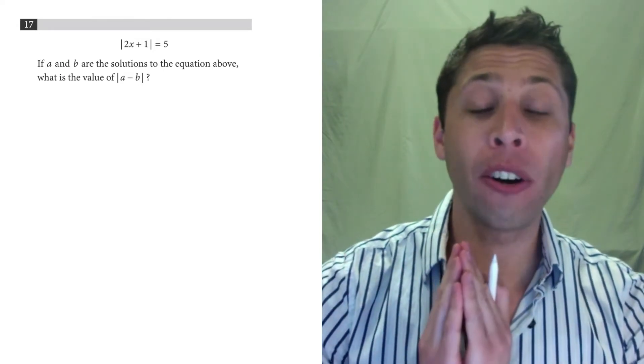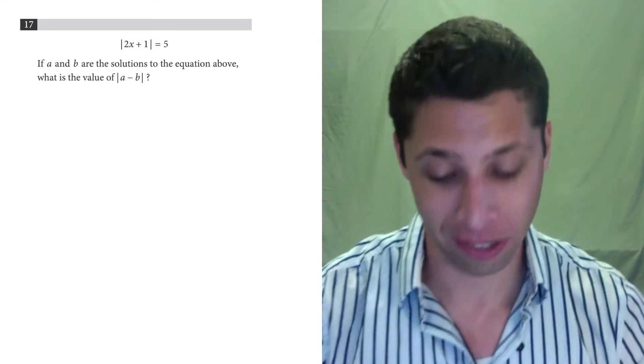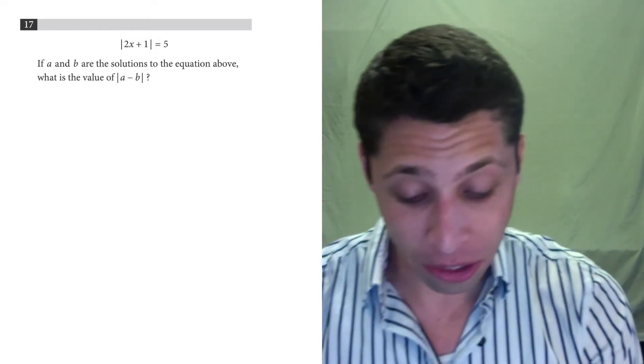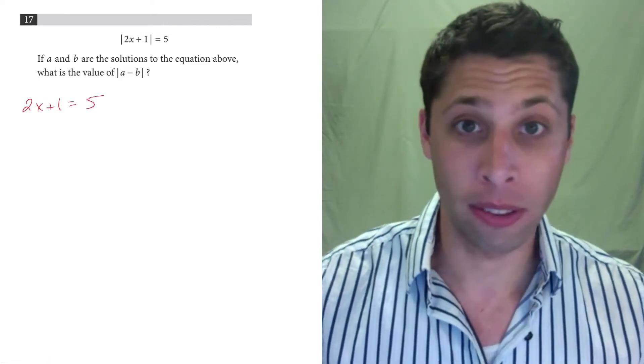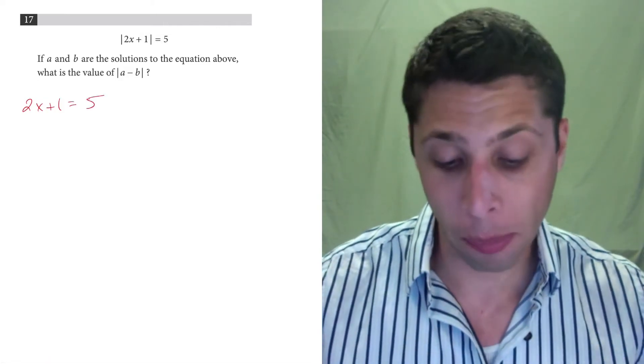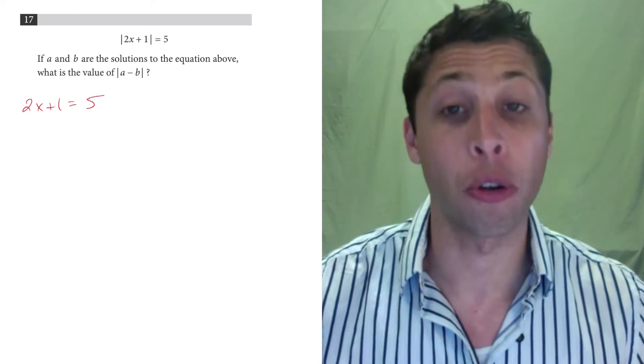Basically, they are a shorthand for two equations. The one equation, the easier one to find, is just what we're given without the absolute value bars. So it drops those bars and leaves us with 2x plus 1 equals 5.